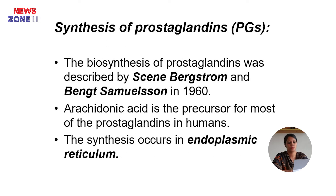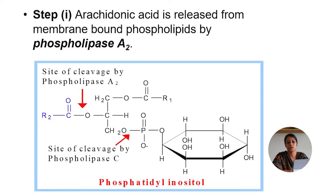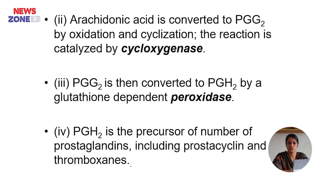Now, synthesis of prostaglandins. The biosynthesis of prostaglandins is from arachidonic acid, which is the precursor for most prostaglandins in humans. The synthesis occurs in the endoplasmic reticulum. Step 1: Eicosanoids are derived from arachidonic acid, which is released from membrane-bound phospholipids by phospholipase A2. Arachidonic acid is then converted to prostaglandin G2 by oxidation and cyclization, a reaction catalyzed by cyclooxygenase. Prostaglandin G2 is then converted to prostaglandin H2 by a glutathione-dependent peroxidase. Prostaglandin H2 is the precursor for a number of prostaglandins including prostacyclin and thromboxanes.